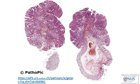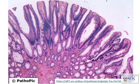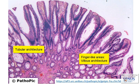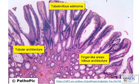At higher power view of the polyp, in some areas the architecture is fairly tubular - you can still see the crypts dipping down. If a polyp is comprised predominantly of these areas, we call it a tubular adenoma. However, if we have other areas that appear more finger-like, and that is the predominant appearance, we call it a villous adenoma. In this instance, we can see both mixed architecture, hence we call this a tubulovillous adenoma.